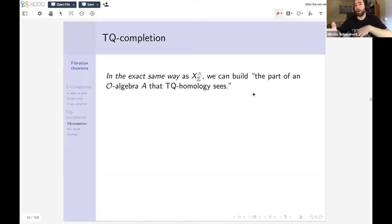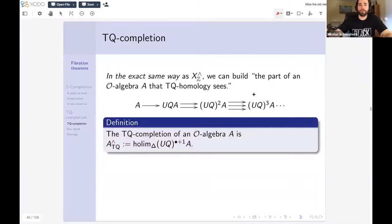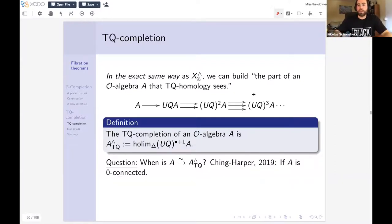In the same way that we tried to build the part of a space that homology sees, like ordinary integer homology, we can build the part of an O-algebra that this TQ homology theory sees. And we do it in the same formal way, that is, I take my O-algebra A, I have my unit map that's acting like a Hurewicz map, and then I iterate it to form this cosimplicial gadget. And then to define the completion, I just glue all that stuff together. So I glue together these TQ homology spectra. Just like in spaces, we can ask, well, when can I recover, excuse me, my O-algebra A, up to weak equivalence by doing this? When can I throw away a lot of information, but still through some formal process, recover the space that I started with, or in this case, recover the O-algebra that I started with? Ching and Harper give, in 2019, sufficient conditions. So they say if A is zero connected, then I can recover this. But that's not a complete characterization. They don't give a complete characterization. And we expect that we're going to need to know, just like Bousfield and Kahn, what does TQ completion do to fiber sequences?